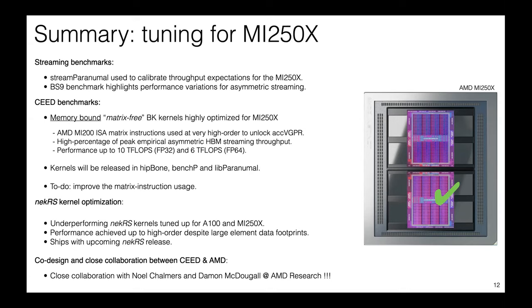To wrap up: we used the Stream Paranormal codes to calibrate throughput expectations for the MI250X. We added BS9 which highlights performance variations for asymmetric streaming — that was important because we needed to understand when to stop optimizing. For BK3 and BK5 we're at the throughput limit we can expect for this GPU. Our kernels are highly memory bound and highly optimized for MI250X. We used AMD MI200 ISA matrix intrinsics at high order to unlock matrix-vector registers for higher orders. These kernels will be released in HipBone, Bench Paranormal, and libParanumal in the near future.